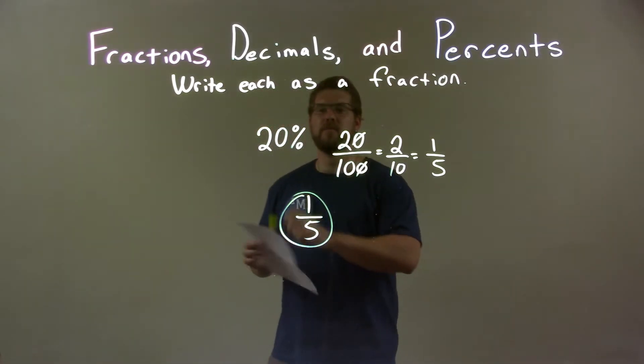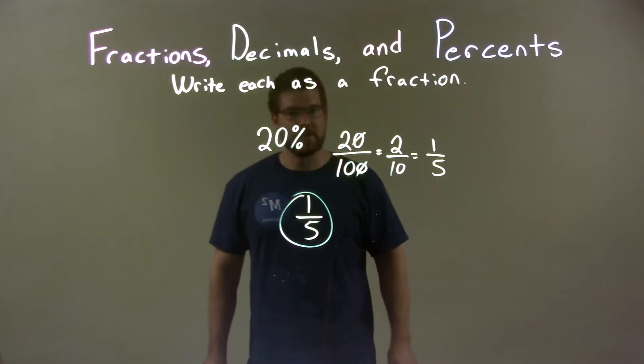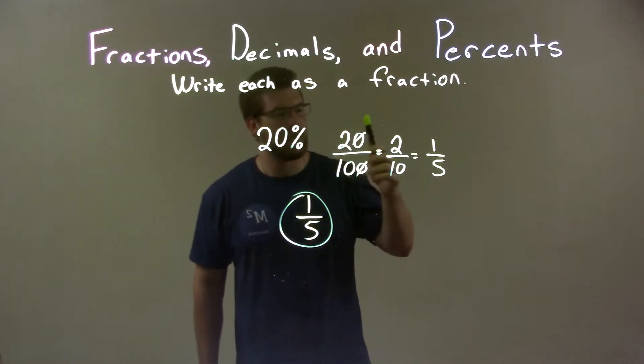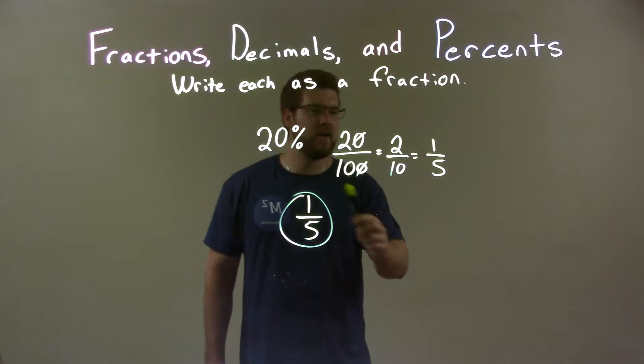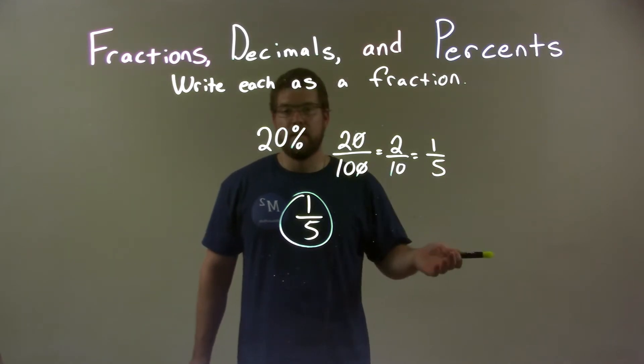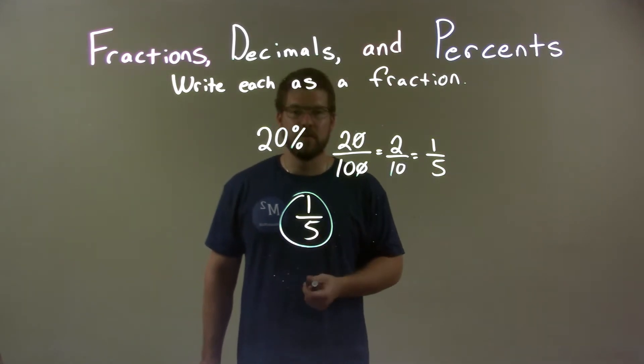So, quick recap. We're given 20% and we have to write that as a fraction. Well, we know 20% is the same thing as 20 out of 100. We simplify that fraction down all the way to 1 fifth and there we have it. Our final answer was just 1 fifth.